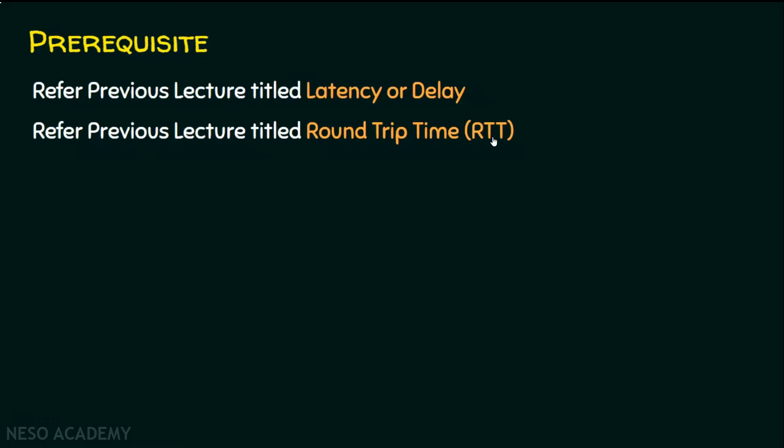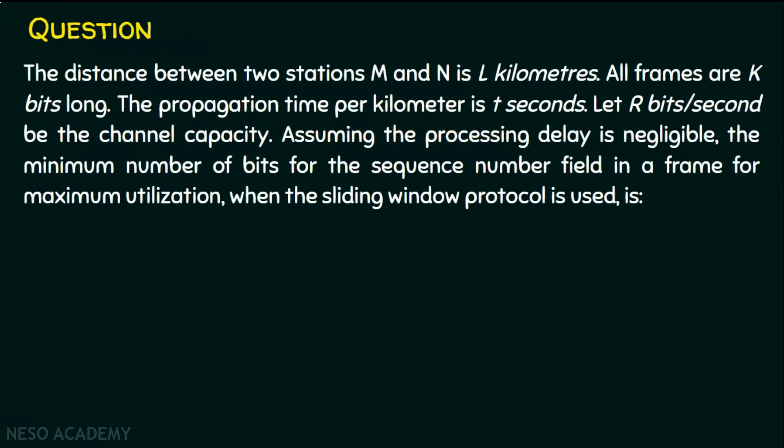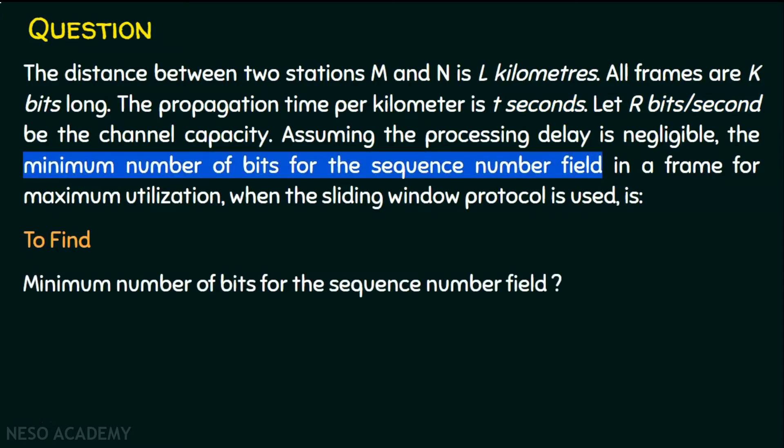Let's revisit this question again. What are the given data? The distance is L kilometers and the frames are k bits long. The propagation time is t seconds and the channel capacity is r bits per second. And we are required to find the minimum number of bits for the sequence number field.